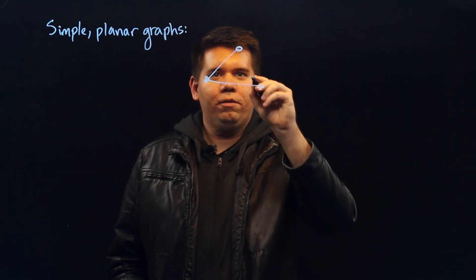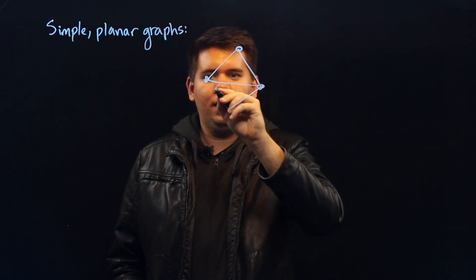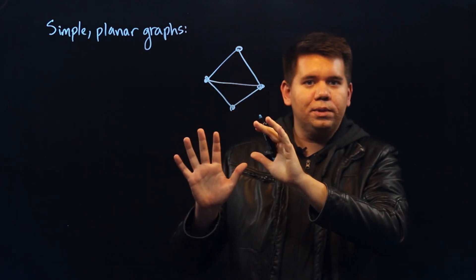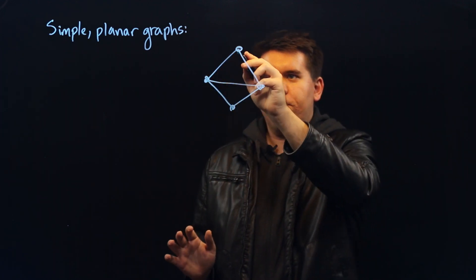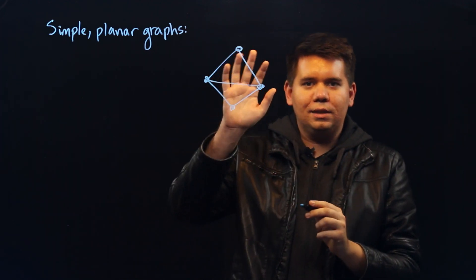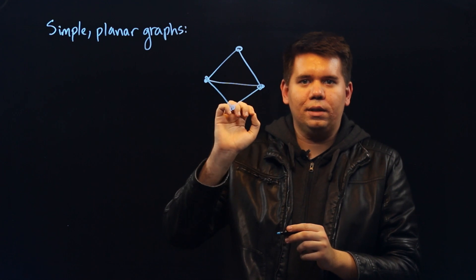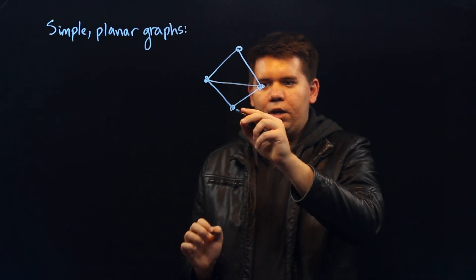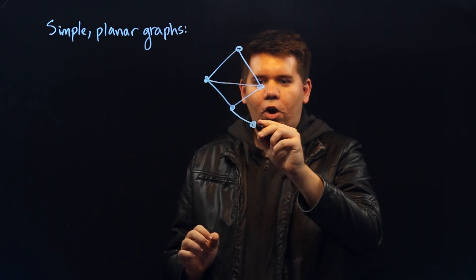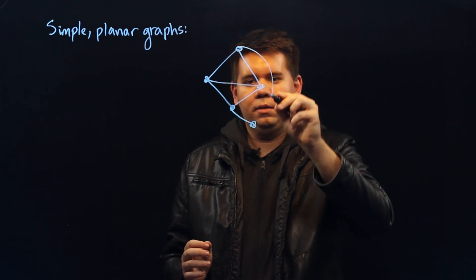We could have a number of vertices that are connected in various ways with no loops and never having multiple edges between the same pair of vertices. But they can go on and do all kinds of interesting things still.